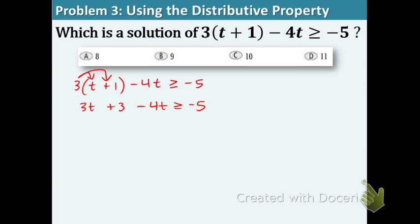And do you see any like terms? I do. These two right here. 3T minus 4T is negative 1T. Bring down the plus 3. Everything else is the same.